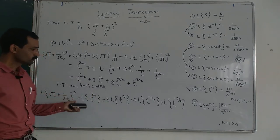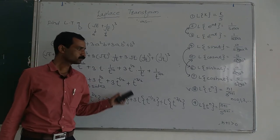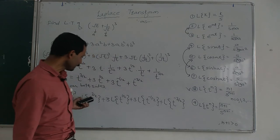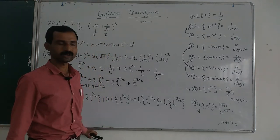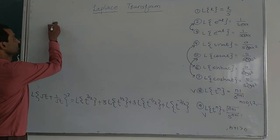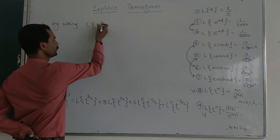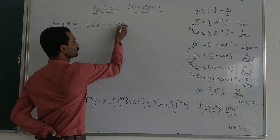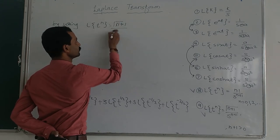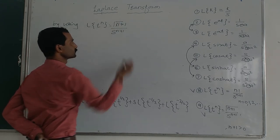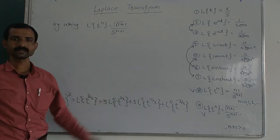Now we will use formula number 9 for each term, because every term has a fractional power. The formula is Laplace of t raised to n equals gamma(n+1) upon s raised to n+1. For the first term, t^(3/2): n equals 3/2, giving gamma(3/2 + 1) upon s^(3/2 + 1). For the second term, t^(1/2): giving gamma(1/2 + 1) upon s^(1/2 + 1).